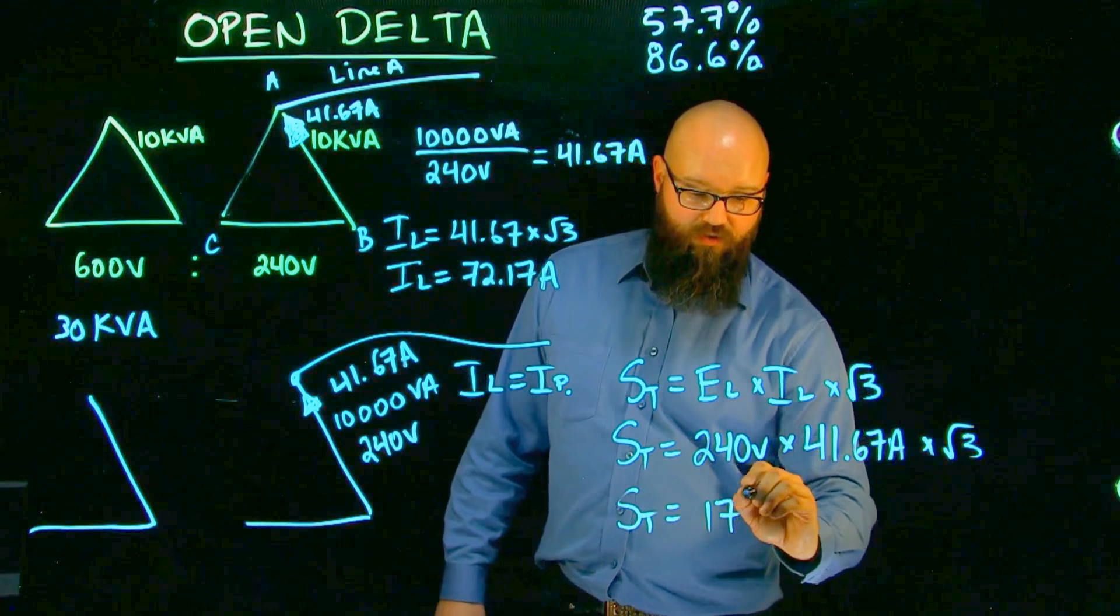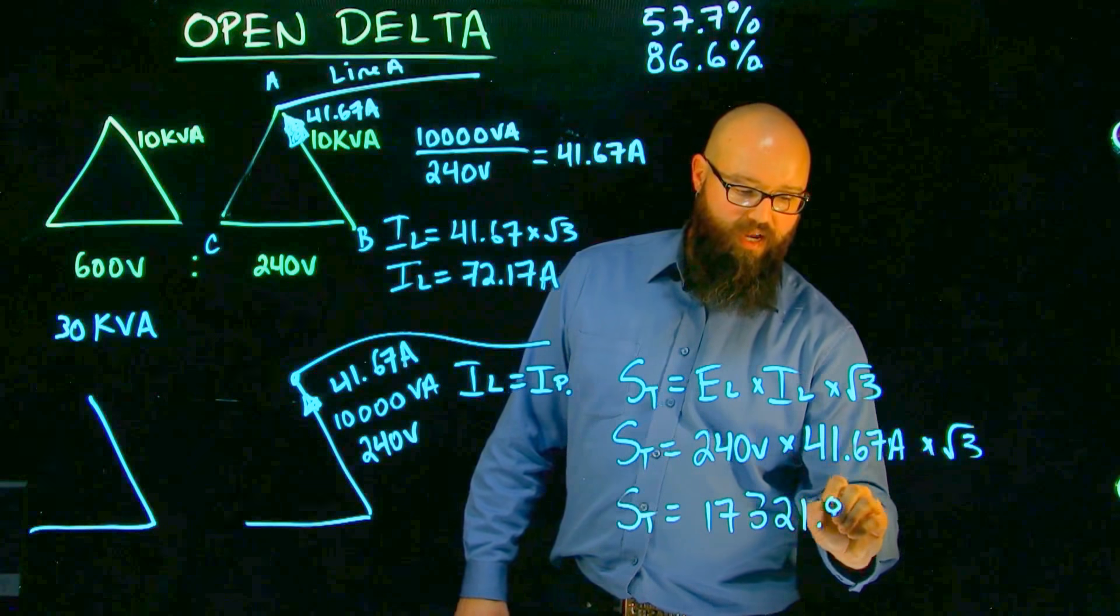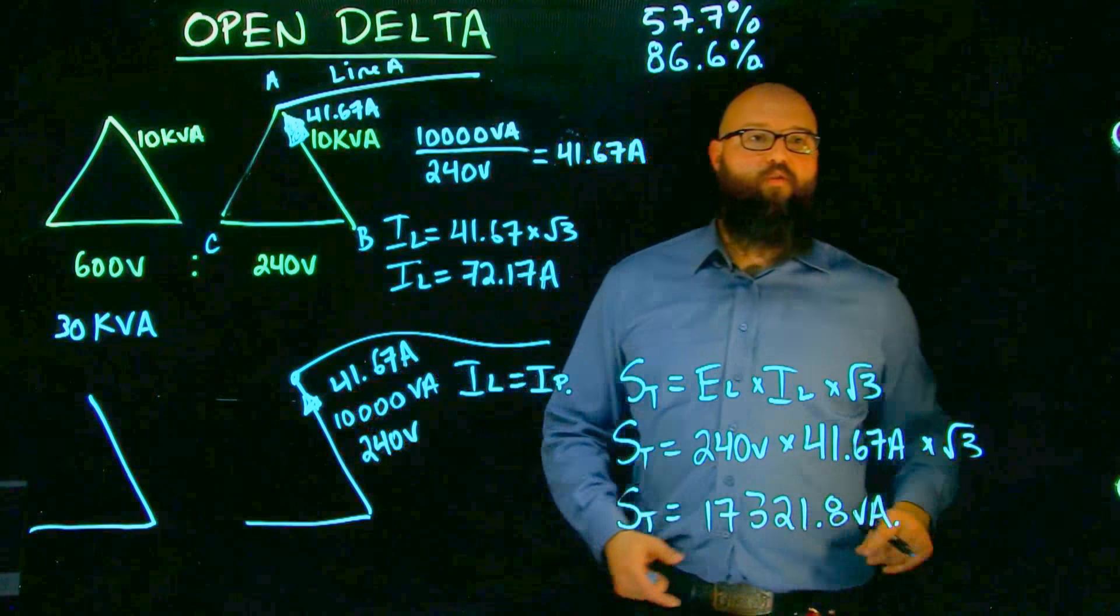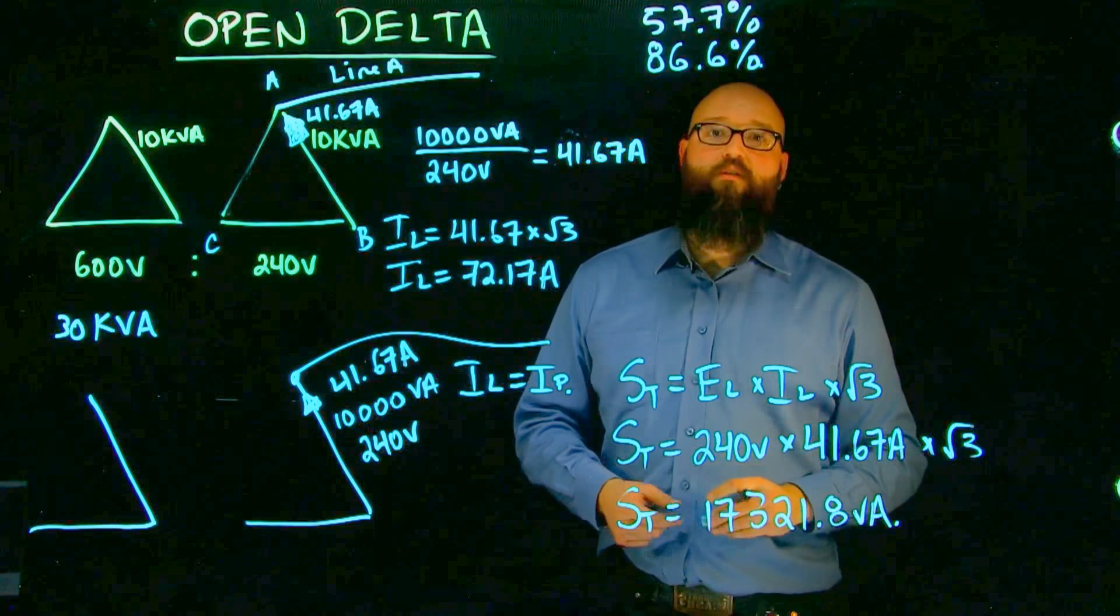times now our line current of 41.67 amps times root three, we end up with an S total now of about 17,321.8 VA. That is now the output of this transformer with its rated current.